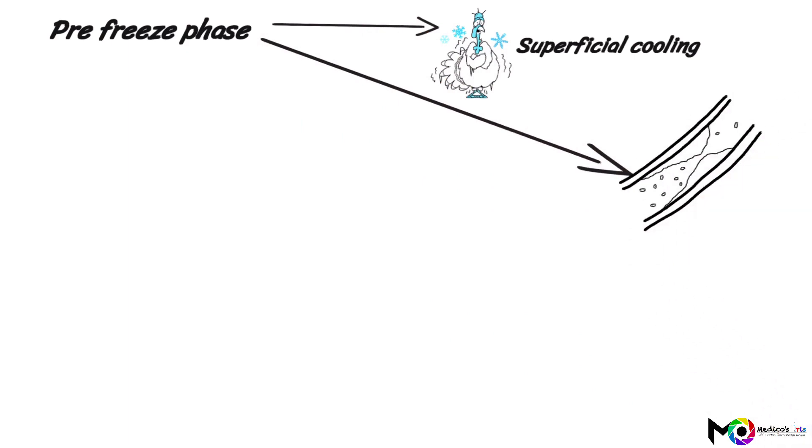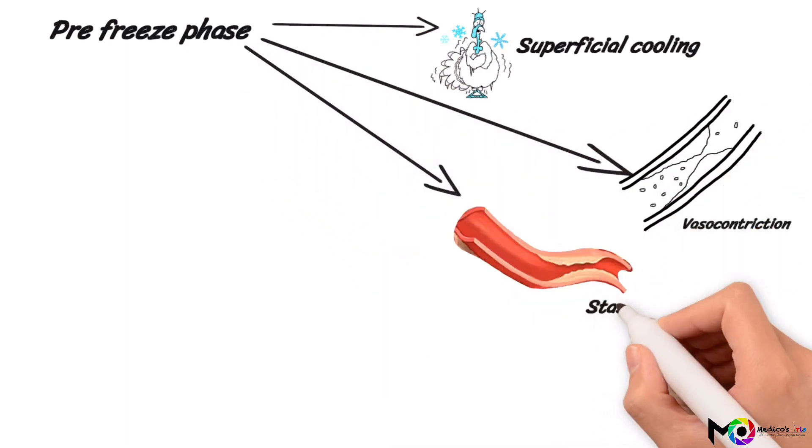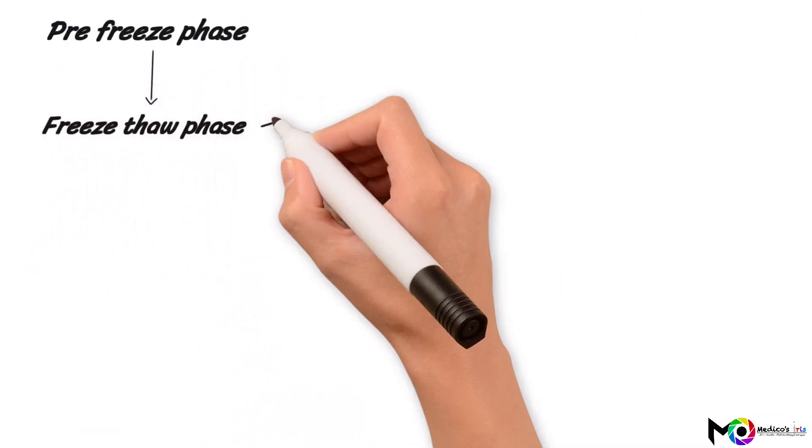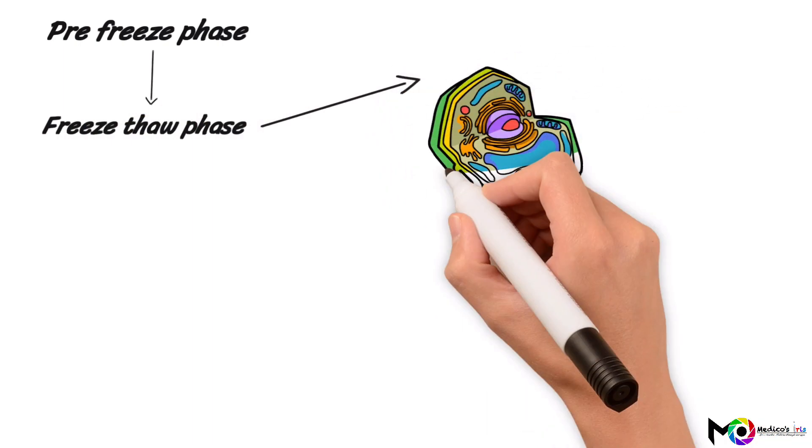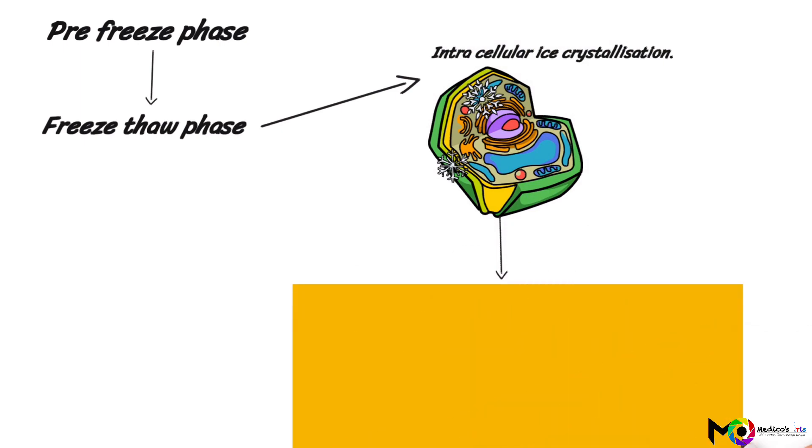Then comes phase two, which is called the freeze-thaw phase. In this phase, the plasma inside the cell freezes on prolonged exposure to cold environments. If the cold exposure continues, the extracellular fluid also freezes, which leads to dehydration of cells.